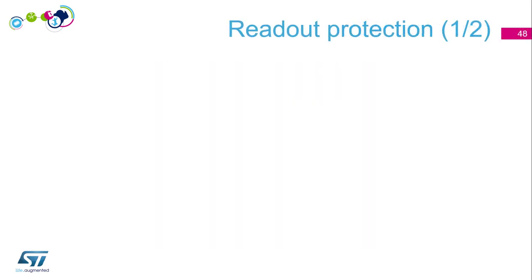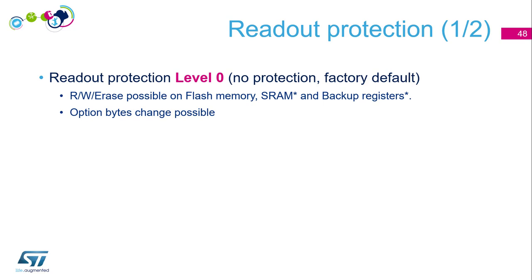RDP level 0 means no protection at all — this is the factory default. When you receive a chip, it is at readout protection level 0. Everything is possible: you can read, write, and erase the flash memory, SRAM, and backup registers. Option byte modification is also always possible. Your device is completely open.